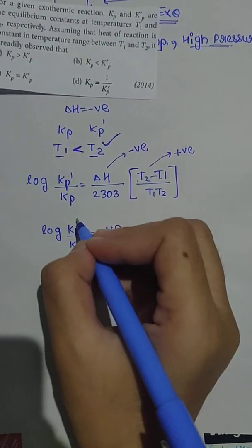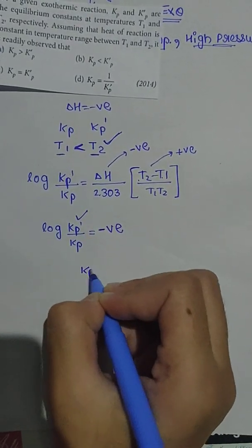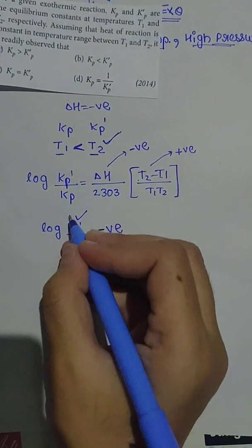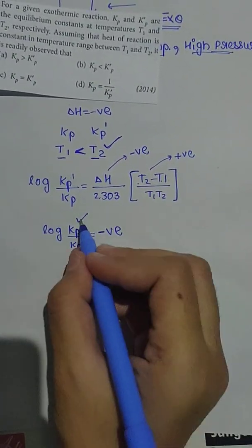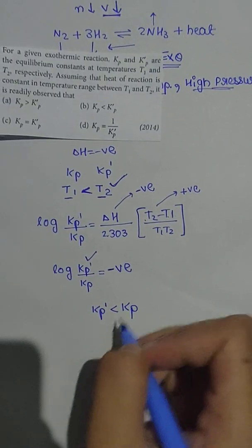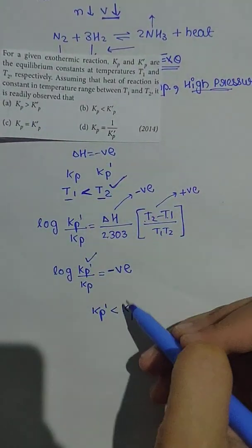When this value is negative, that means the numerator is less than the denominator. If the numerator is greater, then log value is positive. But if the numerator is less, then log value is negative. Let's see which option is given.